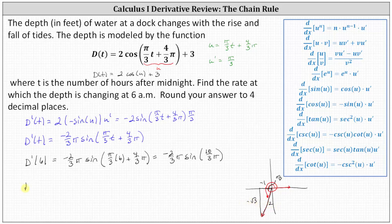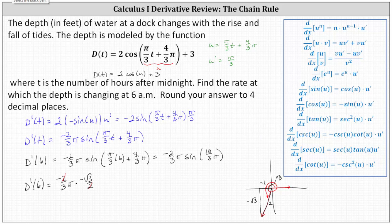So now we know that d prime of six is equal to negative two-thirds pi times negative square root three divided by two. Simplifying: two divided by two simplifies to one, and a negative times a negative is positive. The exact rate at which the depth is changing is square root three divided by three times pi feet per hour.